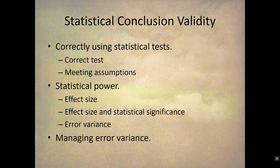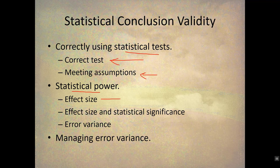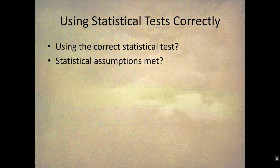The important things about statistical conclusion validity are correctly using statistical tests — using the right test for the right data and the right situation and meeting assumptions of the test. Making sure that you have adequate statistical power, which requires you to understand what effect size is, effect size and significance, and error variance. Managing error variance is important when talking about power, effect size, and statistical conclusion validity.